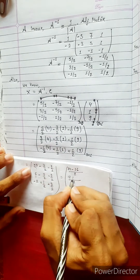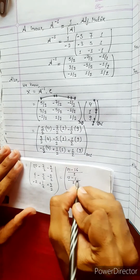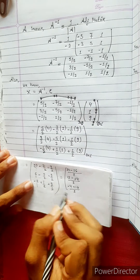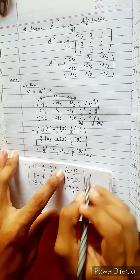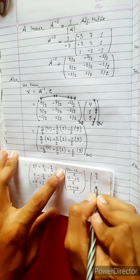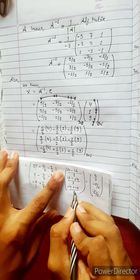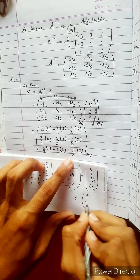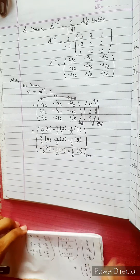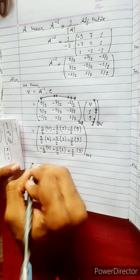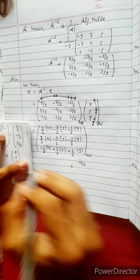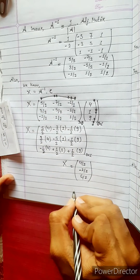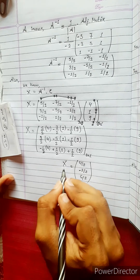Minus 4 plus 10 gives: 4 by 2, which is 14. Then minus 2 by 2. Then 6 by 2. This equals 2, minus 1, 3. So the final answer is x equals 2, y equals minus 1, z equals 3.